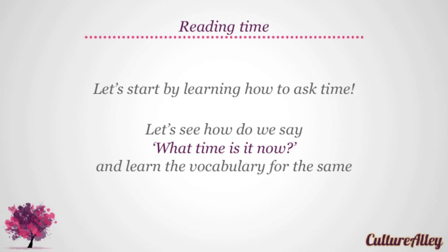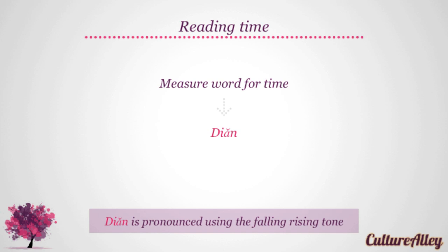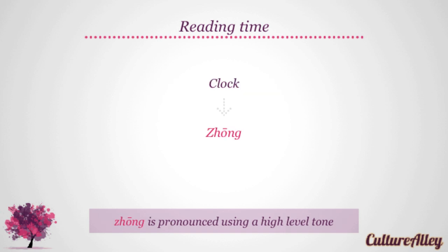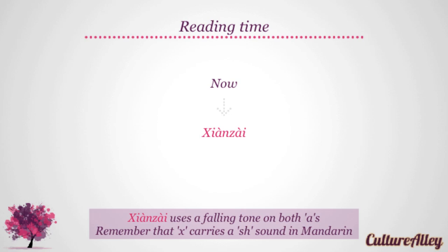Let's see how we say 'what time is it now' and learn the vocabulary for the same. The measure word for time is dien and it is pronounced using a falling-rising tone, like dien. Clock translates to zhōng, which is pronounced using a high level tone, like zhōng. Now becomes xiàn zài. Xiàn zài uses a falling tone on both a's. Remember, the x carries a 'shh' sound in Mandarin. Can you try saying xiàn zài?